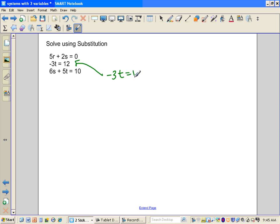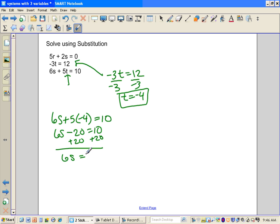So we're going to start with that one. If negative 3t is equal to 12, then t is equal to negative 4. We already have one variable. Well, once we have one variable, let's plug it into the equation that we know. So 6s plus 5 times negative 4 for the t is equal to 10. 6s subtract 20 is equal to 10. If I add 20 to both sides, 6s is equal to 30. Divide by 6, s is equal to 5.